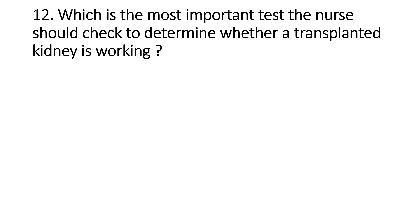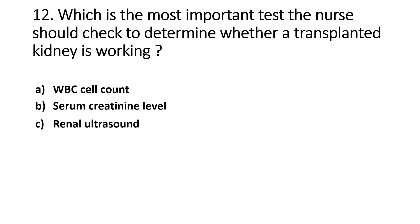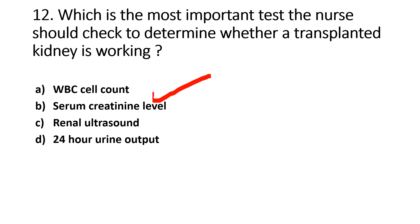Which is the most important test a nurse should check to determine whether a transplanted kidney is working? Option A - WBC cell count, Option B - Serum Creatinine Level, Option C - Renal Ultrasound, Option D - 24-hour urine output. The right answer is Option B, Serum Creatinine Level.